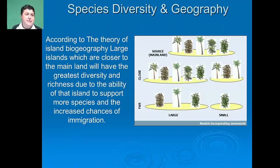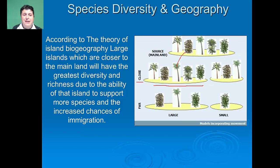Another way that geography can enhance species diversity is with islands. According to the theory of island biogeography, a large island which is close to the mainland is going to have the greatest diversity. This is because the large size of that island will support more diversity, and its closeness to the mainland allows for a greater chance of species immigration. Whereas a small island further away from the mainland will be less able to support biodiversity and less able to allow for immigration.